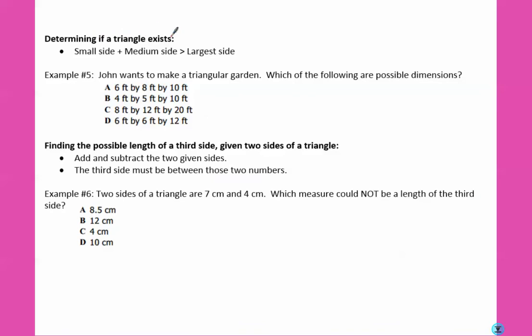Determine if a triangle exists. The small side plus the medium side has to be bigger than the largest side. So in example number five, John wants to make a triangular garden. Which of the following are possible dimensions? So the first thing you want to check is do the numbers go in order from smallest to largest? Six, eight, ten. Yep. Four, five, ten. Good. Eight, twelve, twenty. Good. And six, six, twelve. So they already have them smallest to largest, so that makes things a little bit easier. So six plus eight equals fourteen, and that's bigger than ten. So right off the bat we know it's A. So let's look at the others.